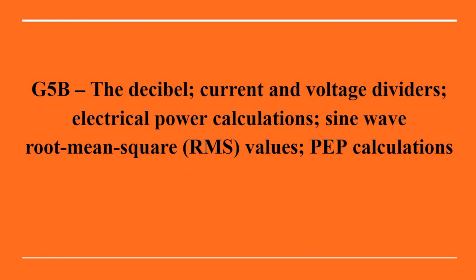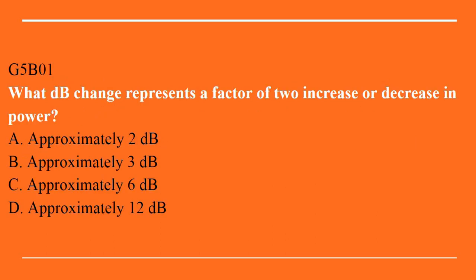G5B covers the decibel, current and voltage dividers, electrical power calculations, sine wave root mean square values, and PEP calculations. G5B01: what dB change represents a factor of 2 increase or decrease in power? A. Approximately 2 dB. B. Approximately 3 dB. C. Approximately 6 dB. Or D. Approximately 12 dB. Answer is B: approximately 3 dB.